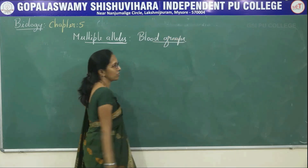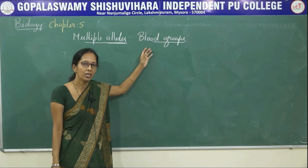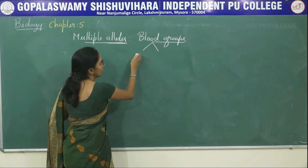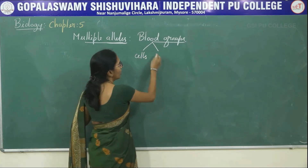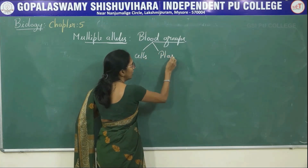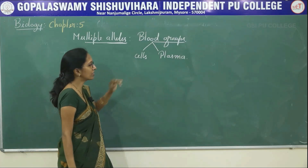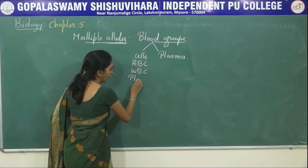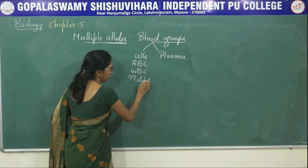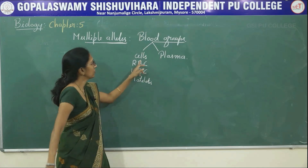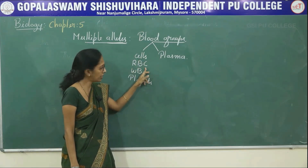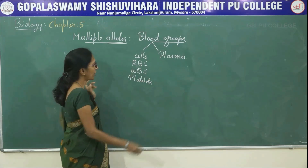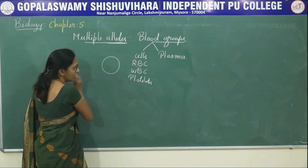In human beings, blood is a fluid connective tissue. It contains two parts: the cellular part and the liquid part, which is called plasma. There are three types of cells: RBC (erythrocytes), WBC (leukocytes), and platelets (thrombocytes).